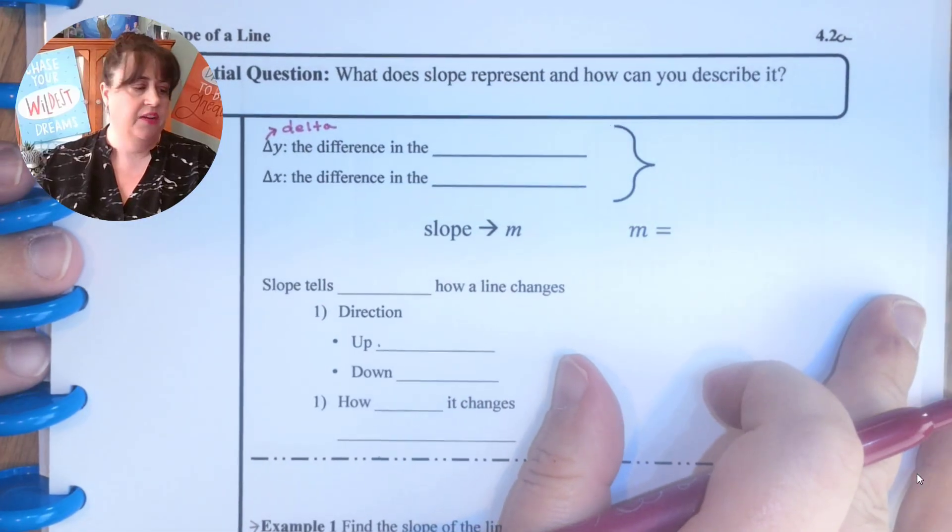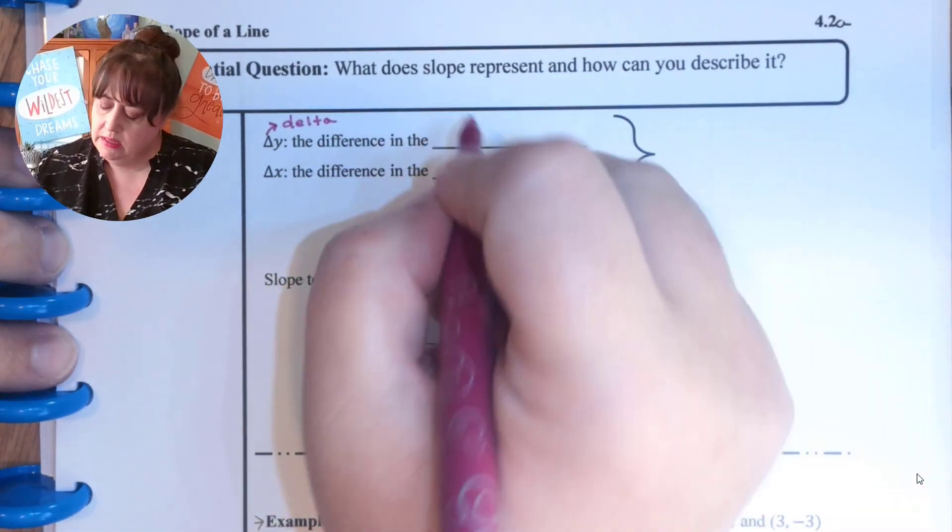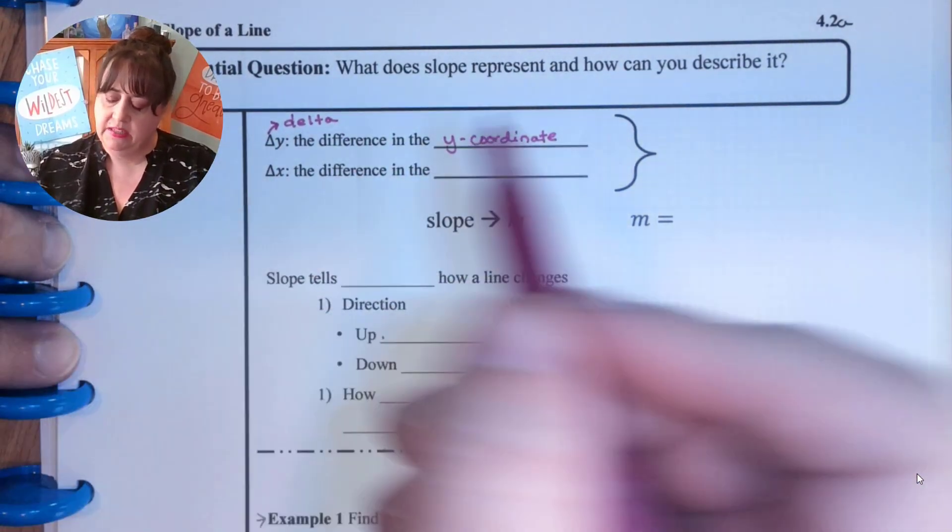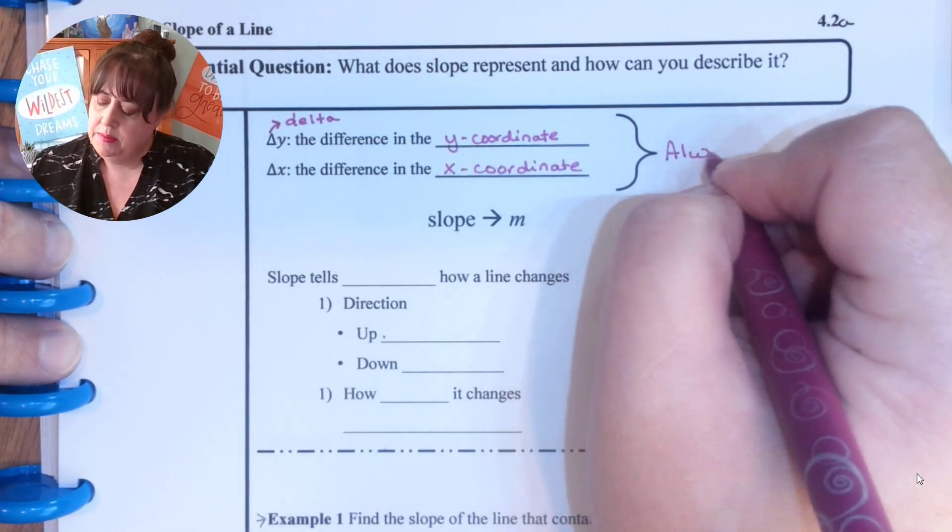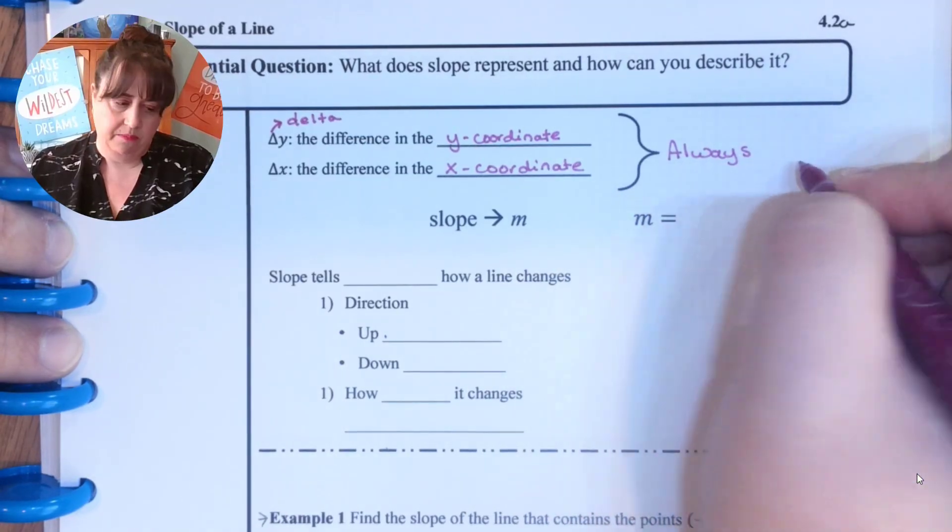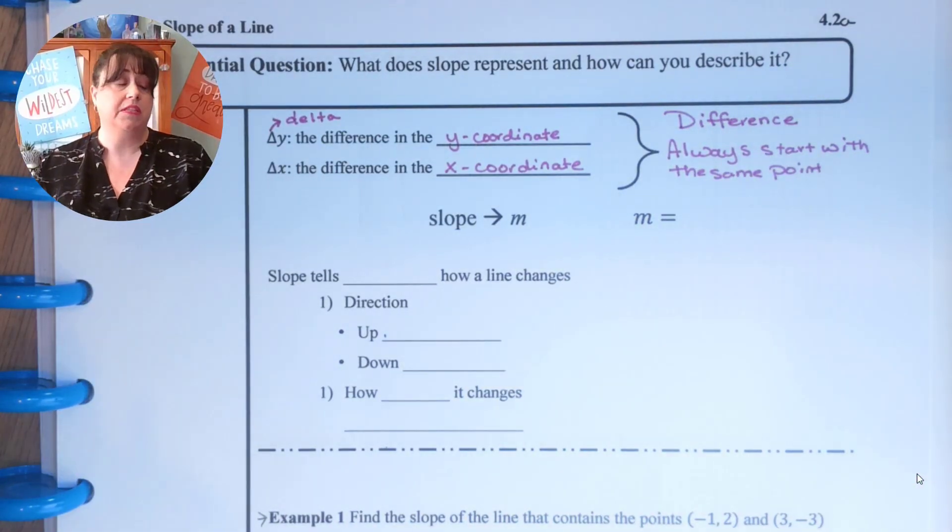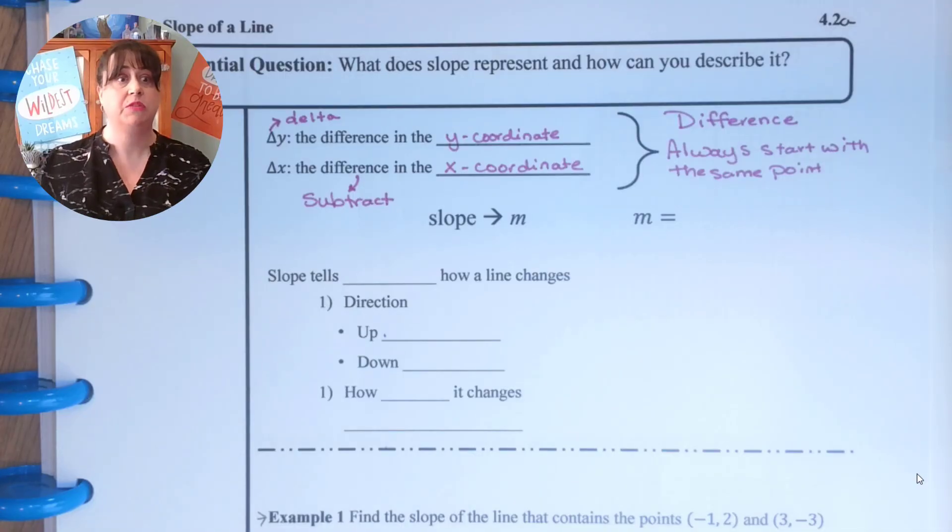So it's the difference in the y-coordinate and delta x is the difference in the x-coordinate. It just means that you're always going to start with the same point and you're going to find the difference, and difference just means to subtract.